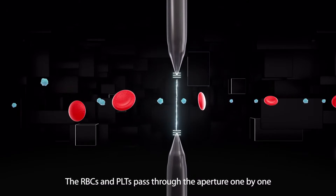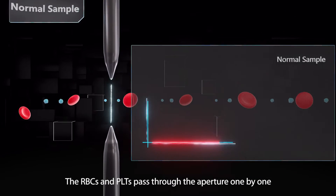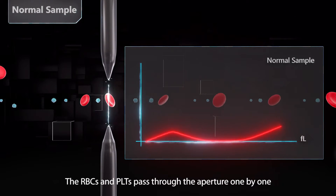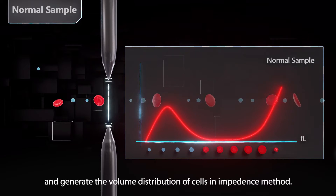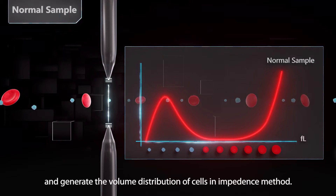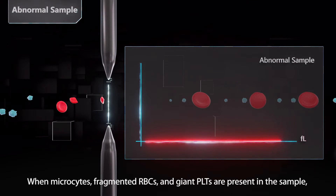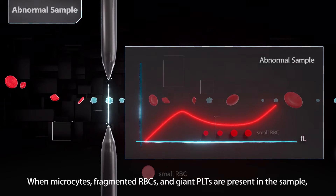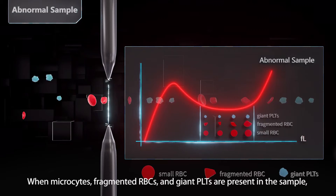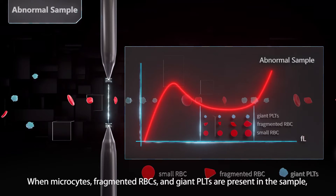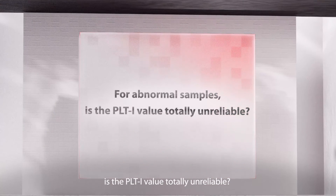The RBCs and PLTs pass through the aperture one by one and generate the volume distribution of cells in the impedance method. When microsites, fragmented RBCs, and giant PLTs are present in the sample, is the PLTi value totally unreliable?